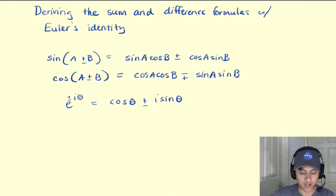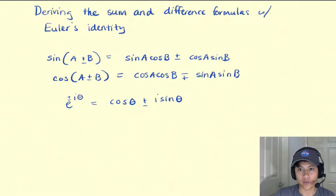Hi everybody, we're going to be looking at how to derive the sum and difference formulas of sine and cosine with Euler's identity.